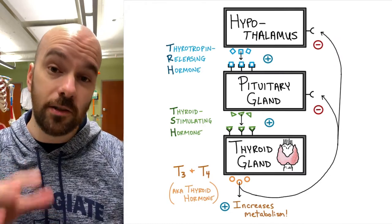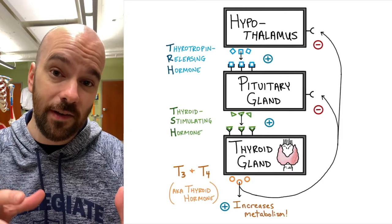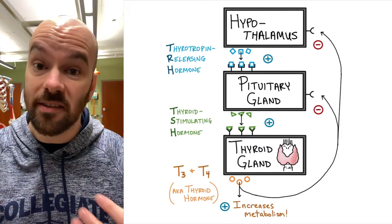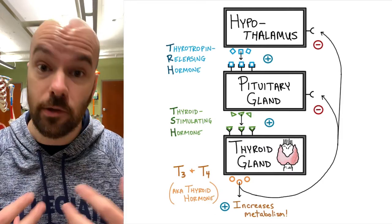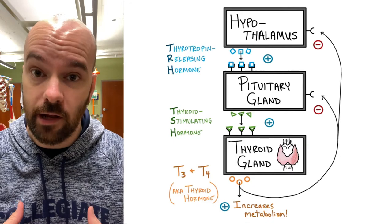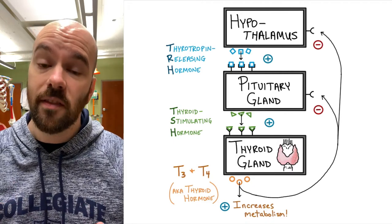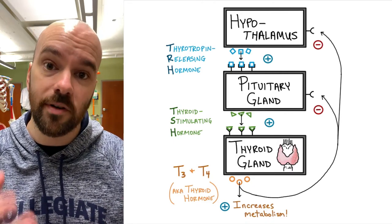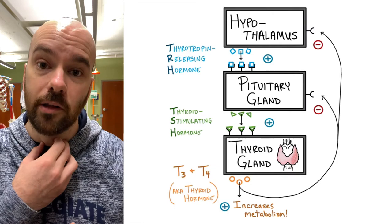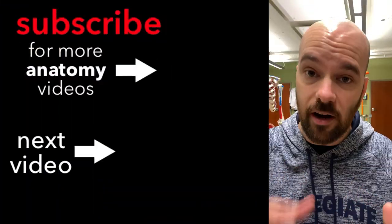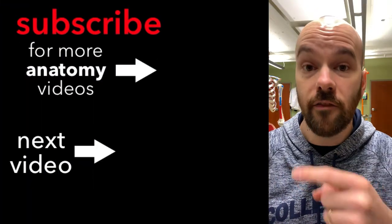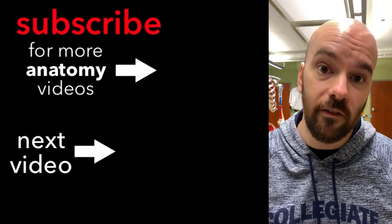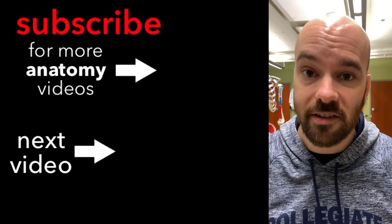Next we'll look at two things that could cause hyper and hypothyroidism: a tumor on the pituitary or thyroid gland, and an autoimmune disease that could either destroy or block receptors on the thyroid gland or pituitary. Click the video link to see how those endocrine disorders of the HPT axis work.